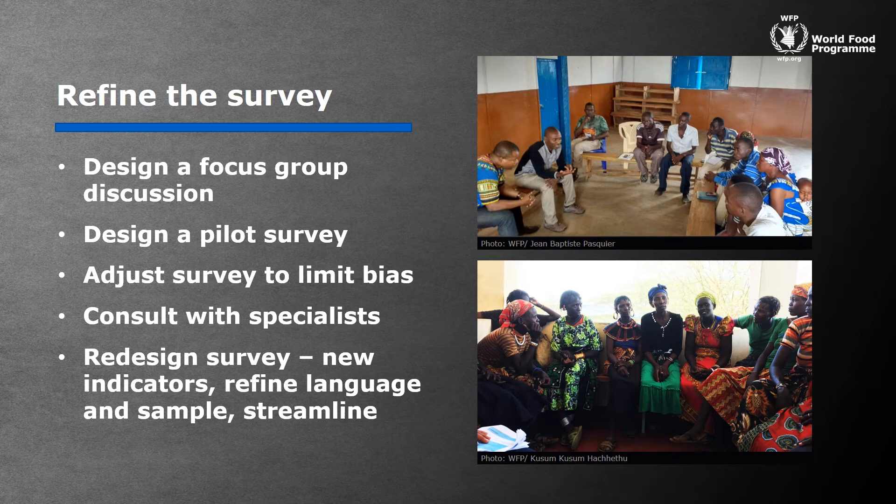If the bias is too large, you could replace household questions with community questions. Throughout this, you should streamline the survey process as much as possible. It might also be necessary to go back to a focus group for that.